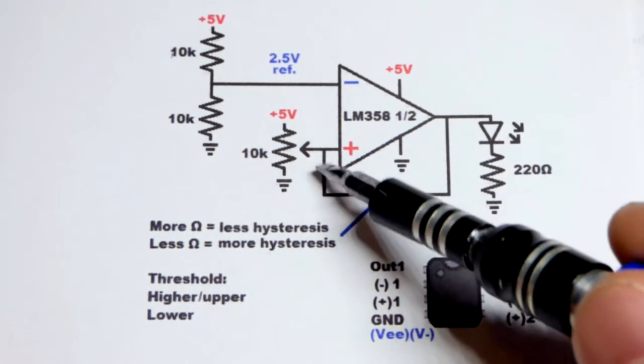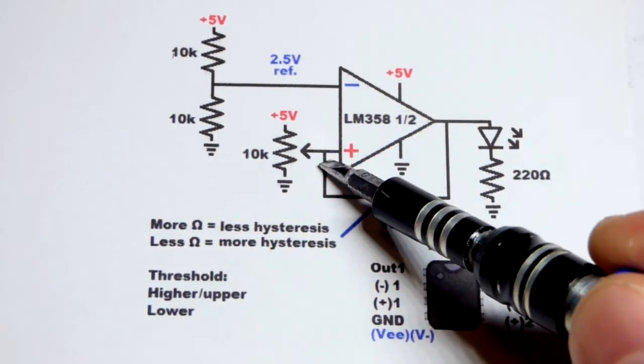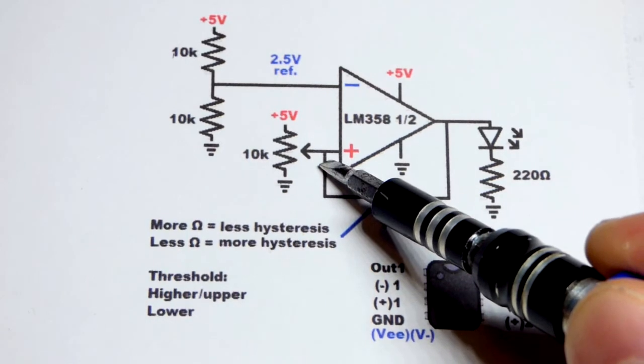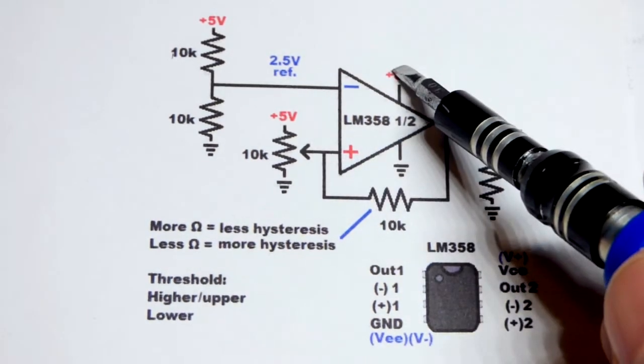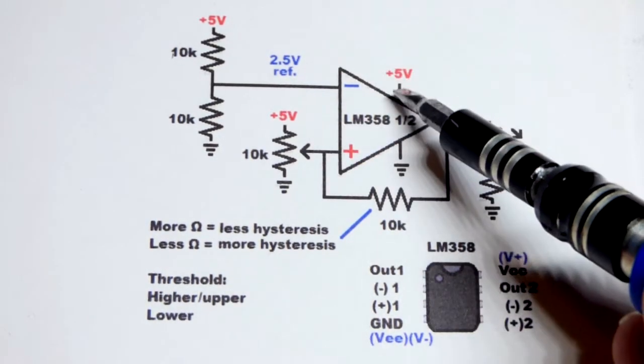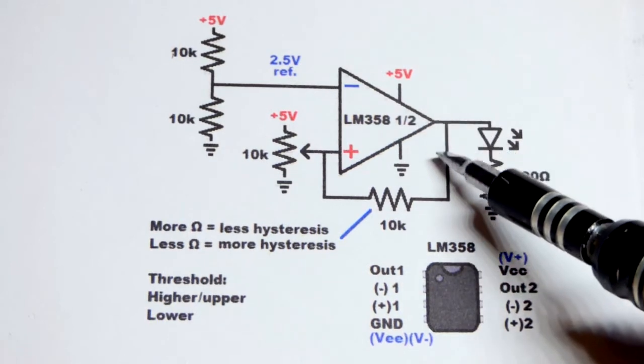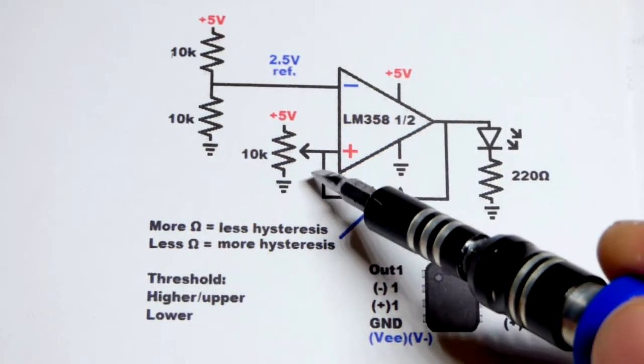So in any case, we got the resistor coming back. And the way this works here is that if the output is high, so the trim pot is high enough where the output is high, you can see we got that connection right there.